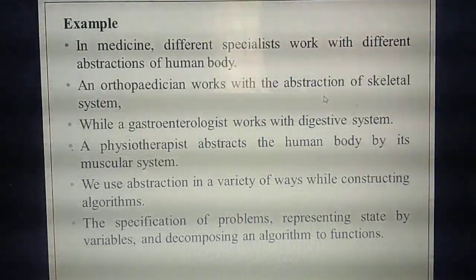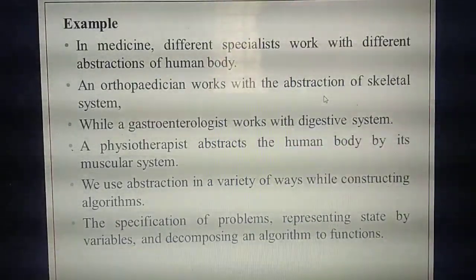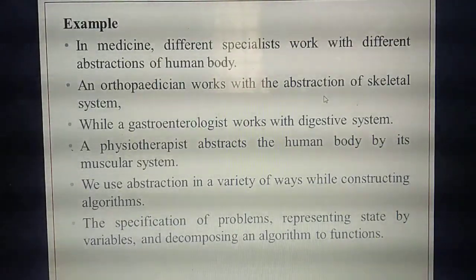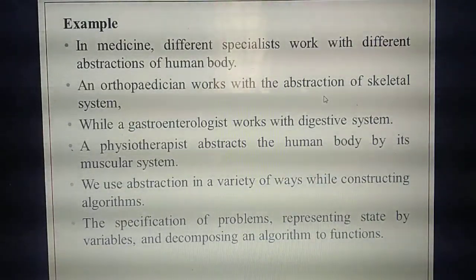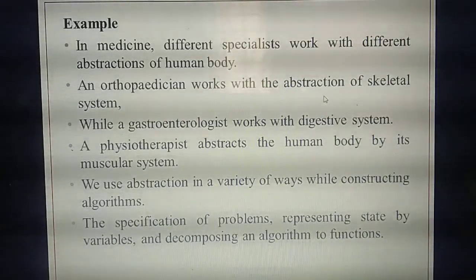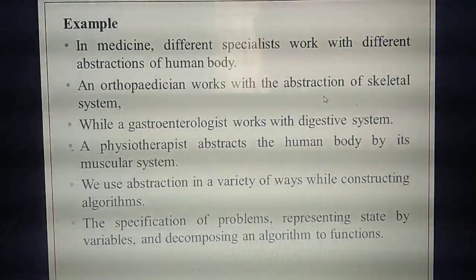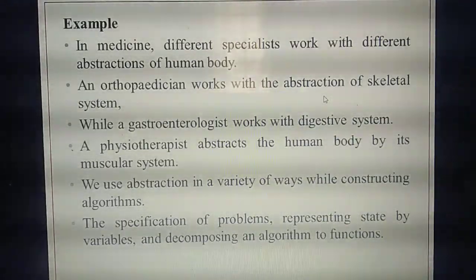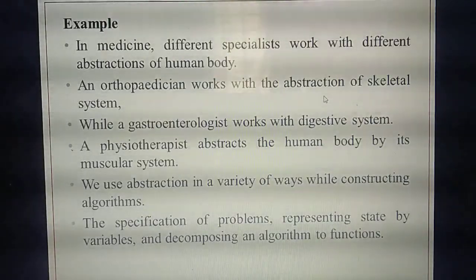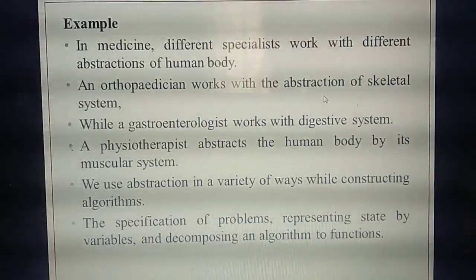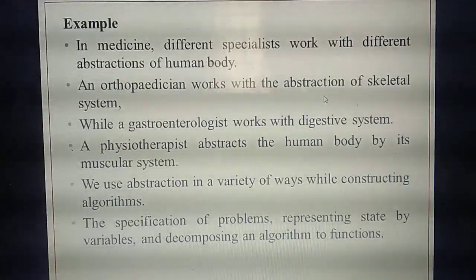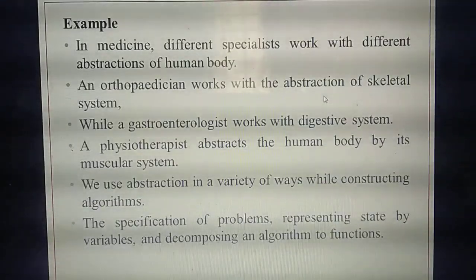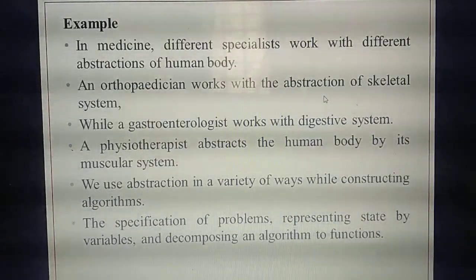So abstraction here means: lot of doctors are there — lot of details. But based on your needs — based on your disease — you go to the particular specialist. For example, if you have pain in your bone, you go to the ortho doctor, not the gastroenterologist. Based on your requirements, you choose the relevant one. That is called abstraction.